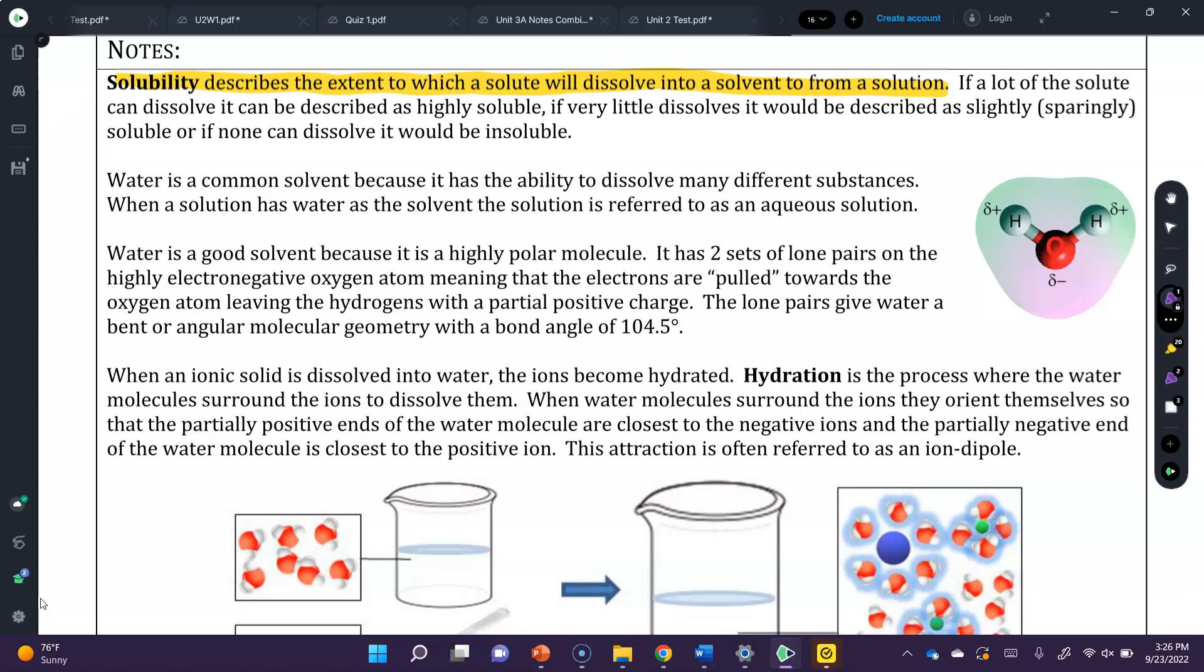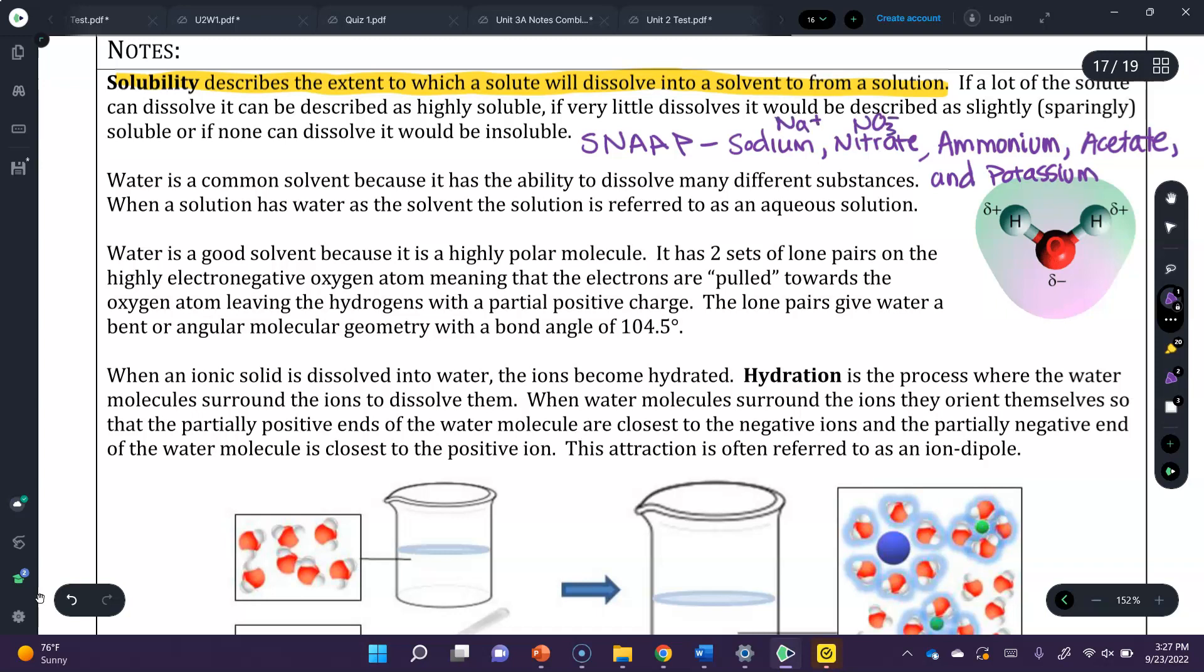For the most part, you don't have to remember a lot of the solubility rules, and we will come to them in more detail when we talk about the solubility constant later. But what you should know is the SNAP rule, and that is anything with sodium ions, nitrate ions, ammonium which is NH4, acetate, and potassium. Sodium is Na, nitrate is NO3 with a 1- charge, ammonium is NH4 with a 1+ charge, acetate is C2H3O2 with a 1- charge, and potassium is K+.